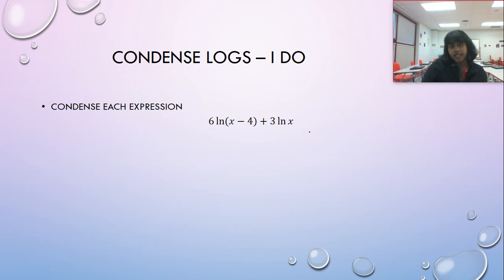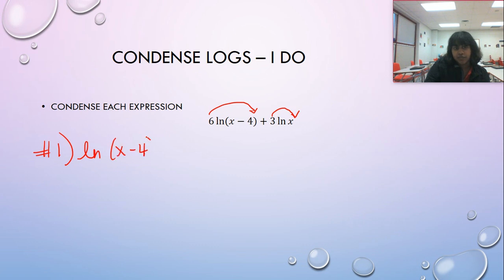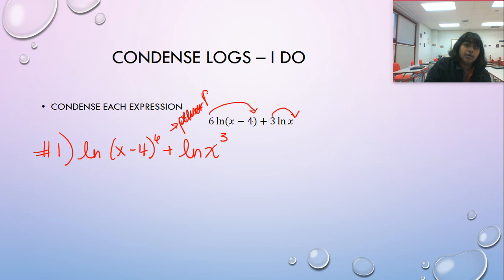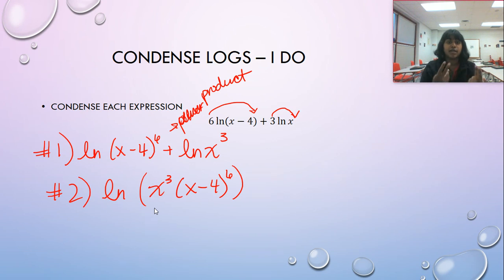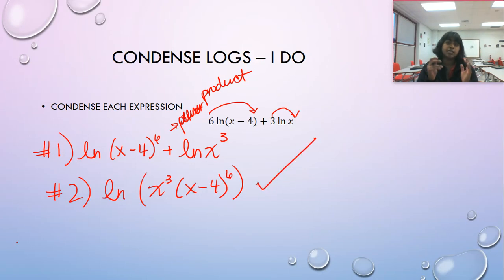One more condensing problem: six times the natural log of x minus four plus three times the natural log of x. Step one, apply the power rules: natural log of x minus four to the sixth plus the natural log of x cubed. This is the product rule, meaning we multiply. So this becomes the natural log of x cubed times x minus four to the sixth. The commutative property confirms multiplication order doesn't matter — and that is the correct final answer.